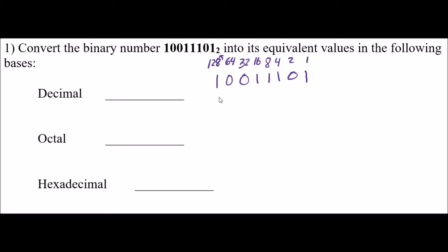To find out the decimal equivalent, I just have to add up every place that I have a 1. So I have 128, plus 16, plus 8, plus 4, plus 1. If I put that in my calculator, I get the decimal value of 157. I'm just adding up every place value where I have a 1. 128 plus 16 plus 8 plus 4 plus 1 is 157. That is my base 10 value.